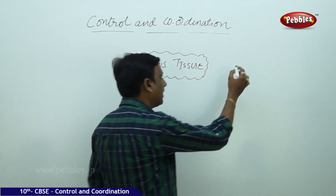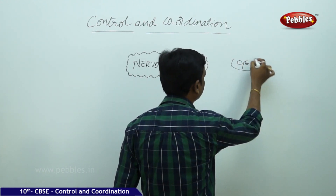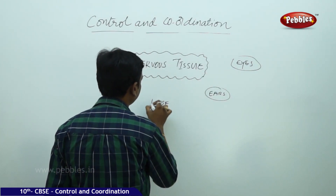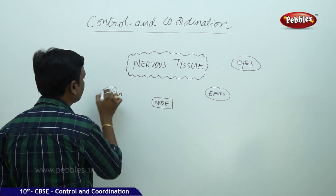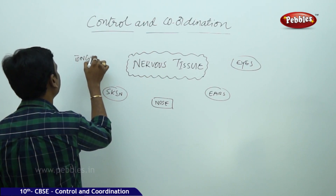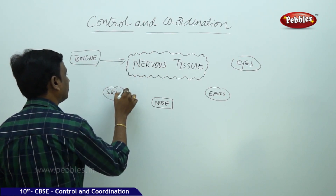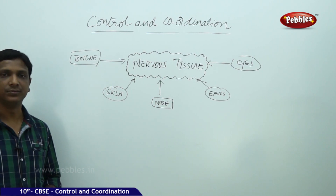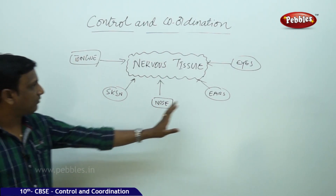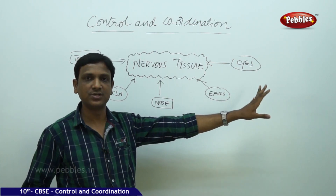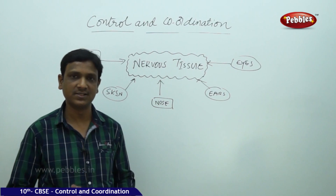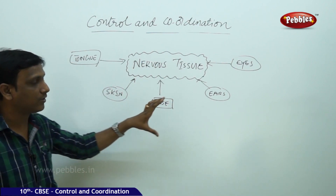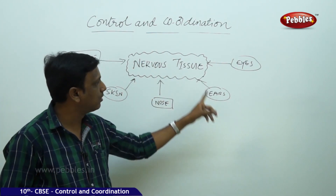Our eyes, ears, nose, skin, and tongue — all these are connected to this nervous tissue. These are all our sense organs, by which we can sense the change in the environment. These organs help to sense the change; they have got some specialized cells which belong to the nervous system.